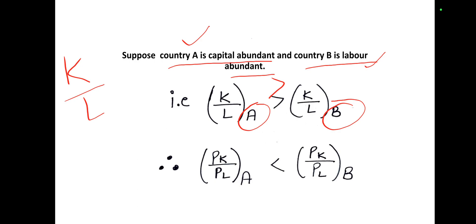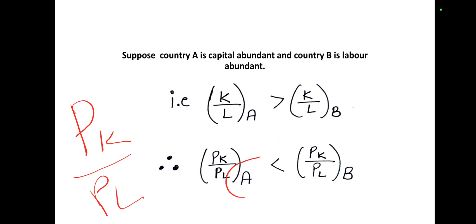Price of capital in country A will be low. So, the ratio of PK to PL of country A will be less than country B.